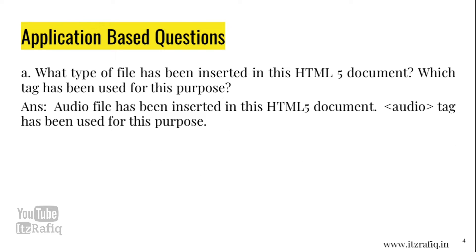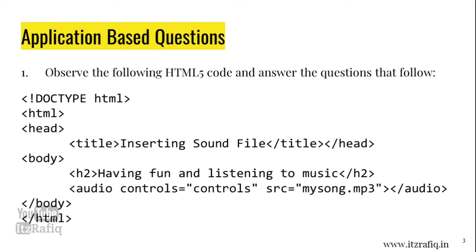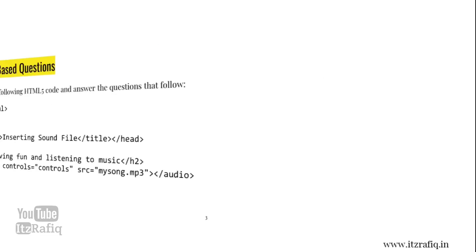An audio file has been inserted in this HTML5 document, and the audio tag has been used for this purpose. We know this because the code contains: audio controls='controls' src='mysong.mpg'. This line tells us the HTML5 code contains an audio file, and inside the audio tag, the controls and src attributes are used.